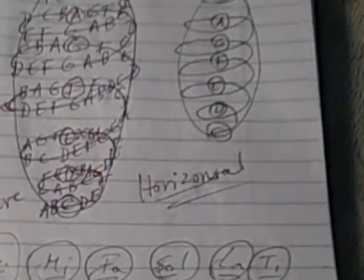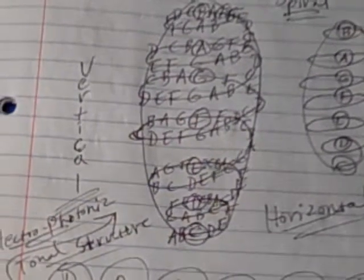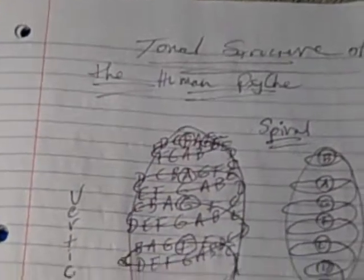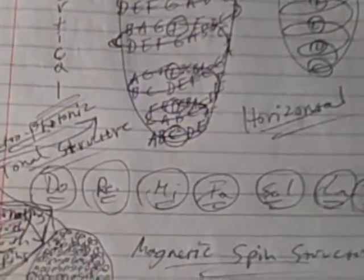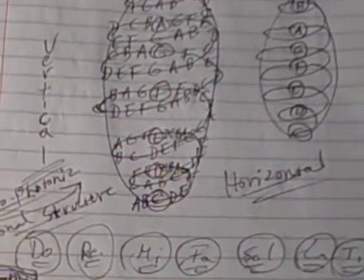So yeah, this is just an idea, a model of the tonal structure of the human psyche. I'll keep working on it. There's still a lot more to be done, so this is just kind of like a short introduction. So that's it. Thanks.